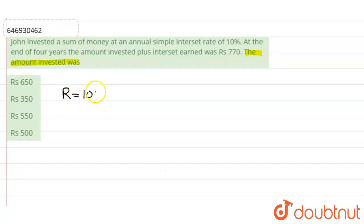Rate is 10%, time period is 4 years, and the amount is Rs 770. What is P plus S.I.?